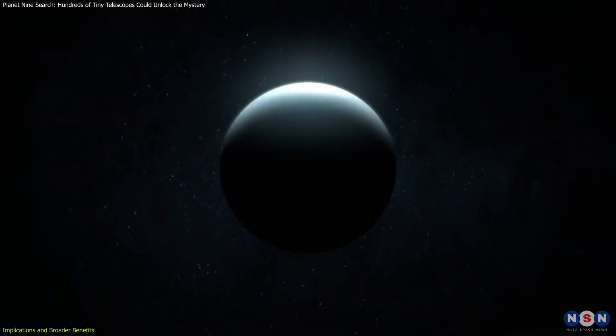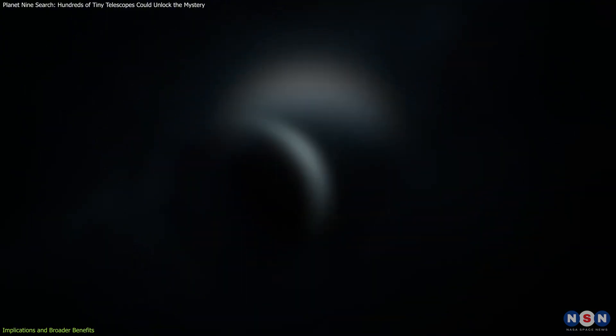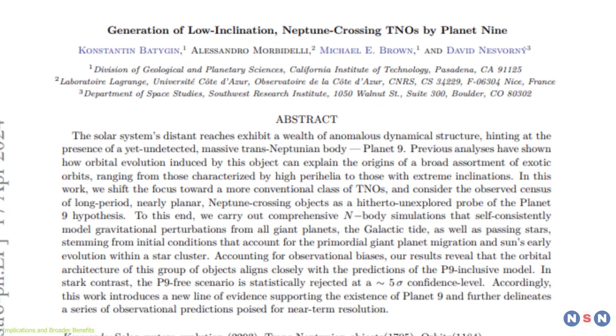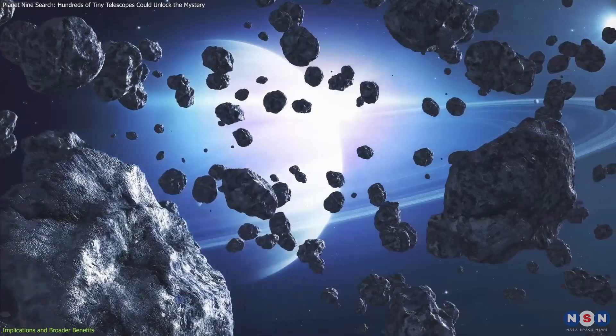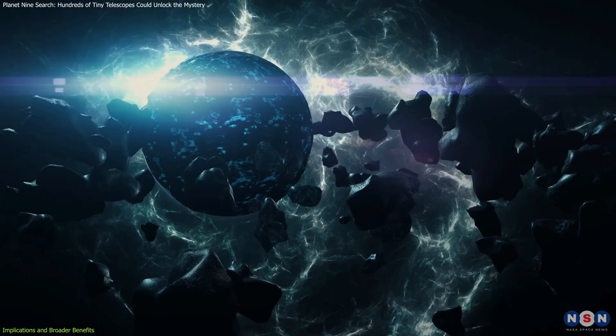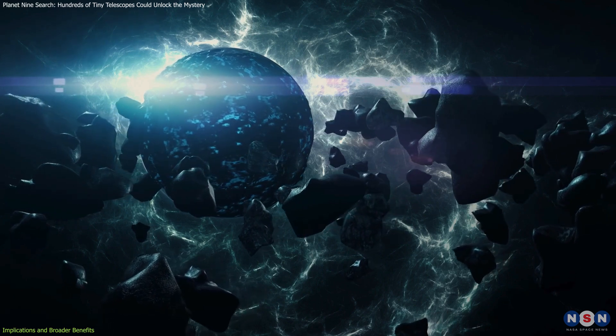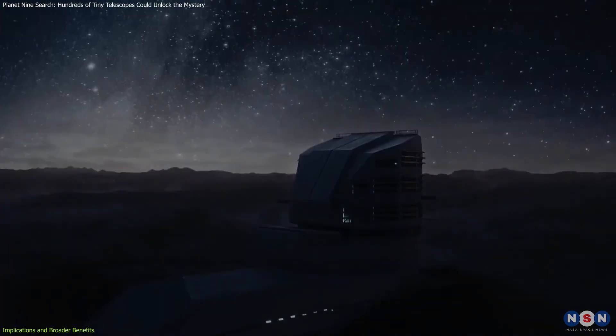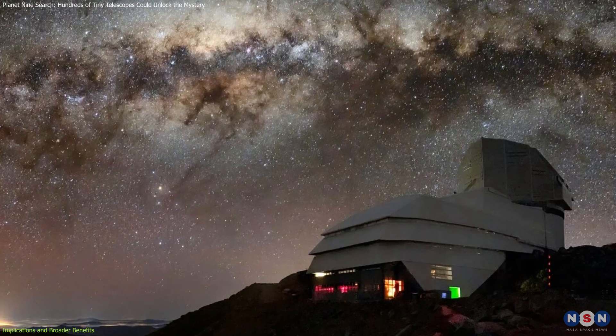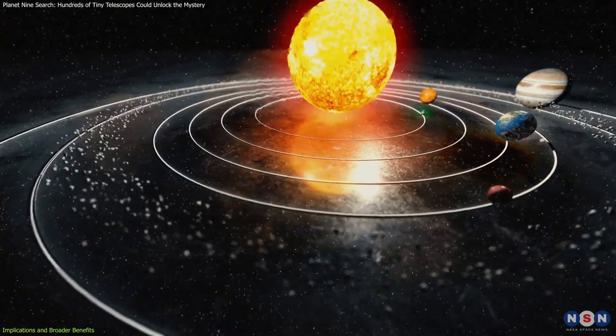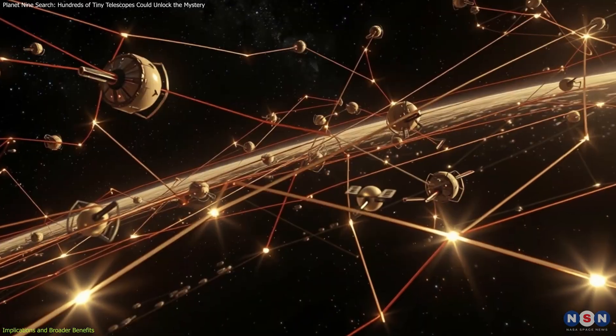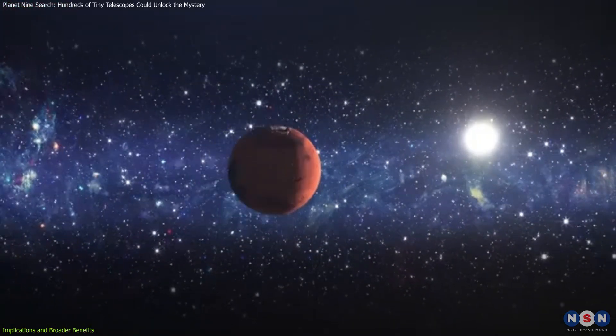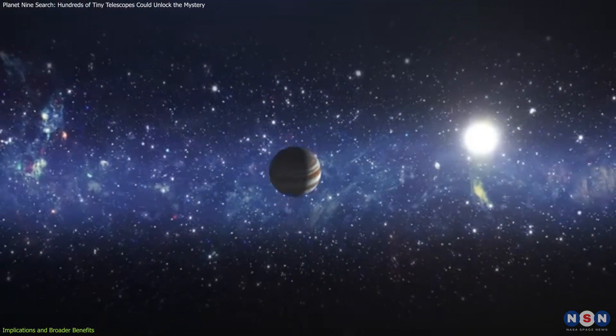Recent developments have further highlighted the relevance of the Planet Nine search. In 2024, a new analysis provided the strongest statistical evidence yet for the existence of Planet Nine, identifying patterns in extreme TNO orbits consistent with the gravitational influence of a massive, unseen planet. Additionally, the upcoming Vera C. Rubin Observatory, scheduled to begin operations in 2025, is expected to play a key role in uncovering distant solar system objects. These efforts, combined with the proposed Occultation Array, underscore the growing momentum in the search for answers about the outer reaches of our solar system.